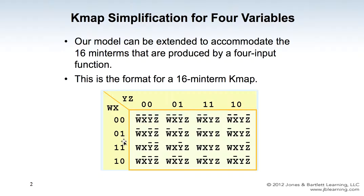The WX columns are ordered: 00, 01, 11, 10. YZ is similarly ordered: 00, 01, 11, 10. For four variables we have 16 minterms, because 2 to the power of 4 equals 16. So we have 16 minterms for four variables based on the variable inputs WX and YZ.